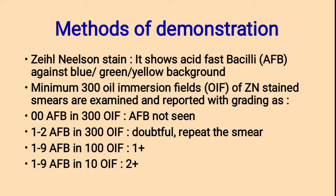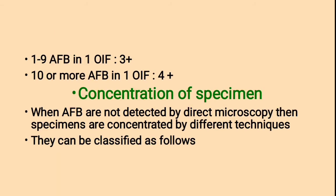Methods of demonstration — Ziehl-Neelsen staining shows acid-fast bacilli against a blue, green, or yellow background. Minimum 300 oil-immersion fields are examined and reported with grading: 0 AFB in 300 fields = no AFB; 1 AFB in 300 fields = doubtful, repeat smear; 1–9 AFB in 100 fields = 1+; 1–9 AFB in 10 fields = 2+; 1–9 AFB in 1 field = 3+; 10 or more AFB in 1 field = 4+, which is very dangerous.